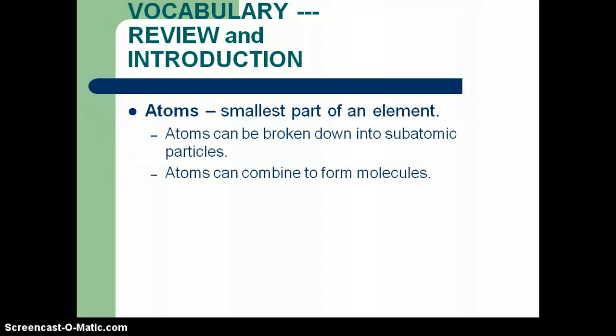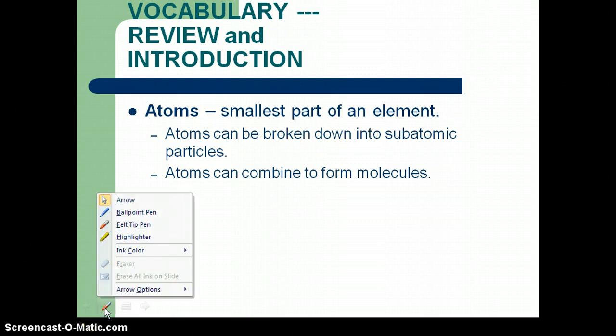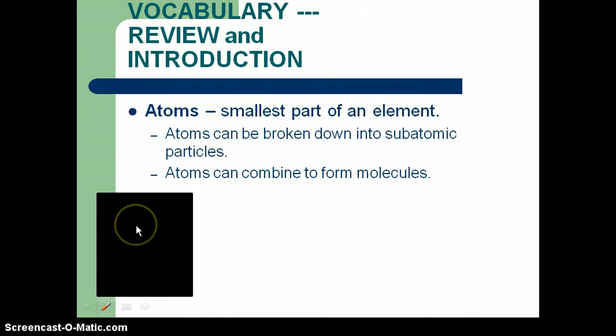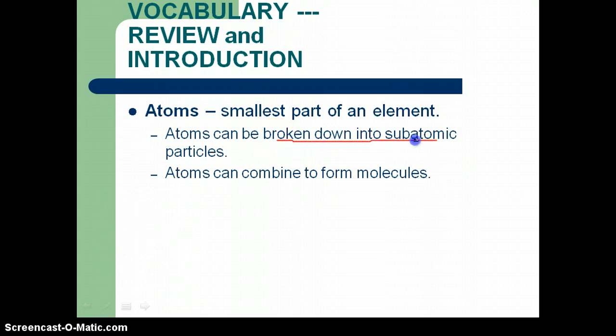A couple things to review about atoms and compounds is to know the definition. So you had this in the last chapter. Atoms, this definition is the smallest part of an element. And so it's really looking at how an element is made up of atoms. And atoms themselves cannot be broken down into new atoms, but they can be broken down into subatomic particles. We're going to go through those on the next few slides, but these would be our protons, neutrons, and electrons.